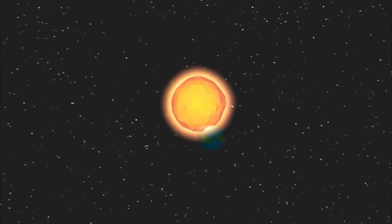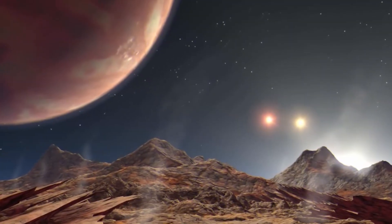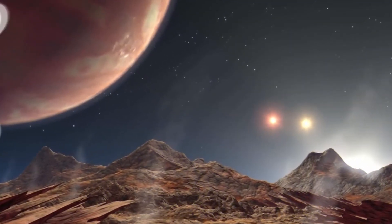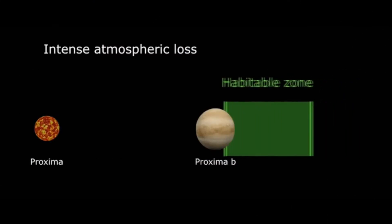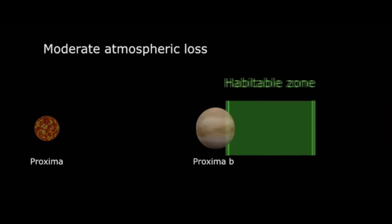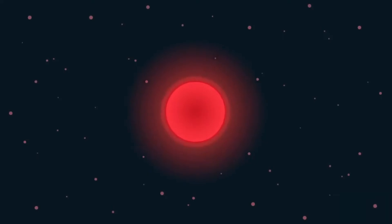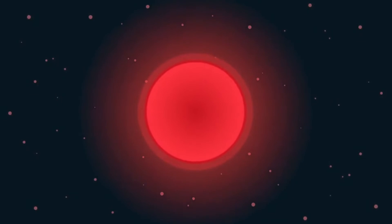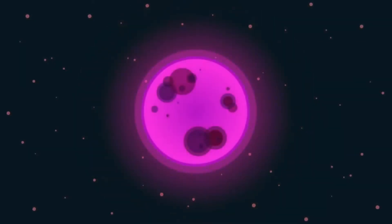So Proxima Centauri b could theoretically have water on its surface. It may be habitable, but we don't know all the details yet. We know that temperature, composition of the planet and atmosphere, water and solar radiation all affect a planet's habitability. Flares from red dwarfs like Proxima Centauri complicate and interest the habitability of red dwarf exoplanets.